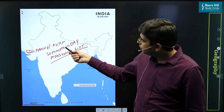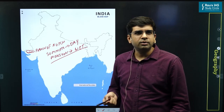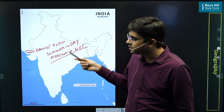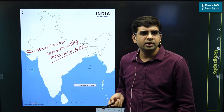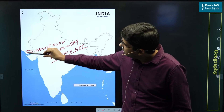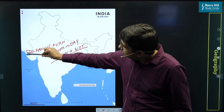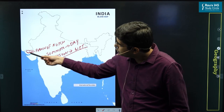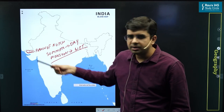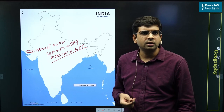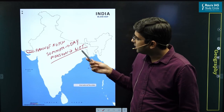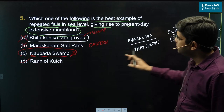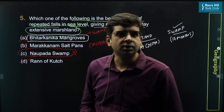So it conforms to the definition of marshes — part of the year it is moist, part of the year it is dry. And it has been formed through the fall in sea level, as the source of seawater supply was cut off due to tectonic activity. So the correct answer for the given question is option D — Rann of Kutch.